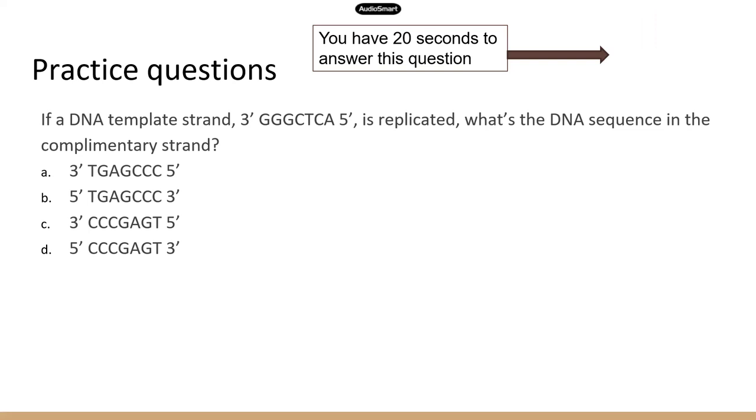Now, with this question, the easiest way is to just do the base pairing first, and then figure out the direction and then look through the answer options and see which one is the same as what you come up with. So when you do base pairing, that will be CCCGAGT. And these two strands should be antiparallel. They run opposite directions. So that means the new strand should be from five to three. There you go. So just look for this new sequence in this direction in the answer choices, which is D. So D is the correct answer.